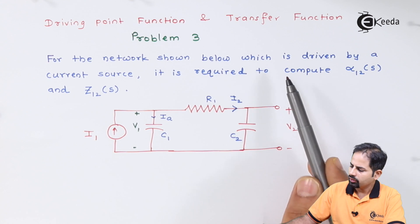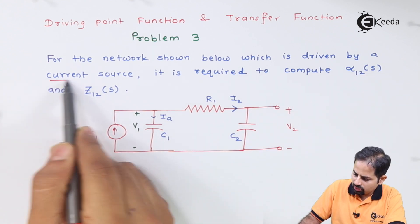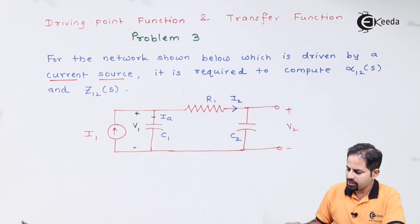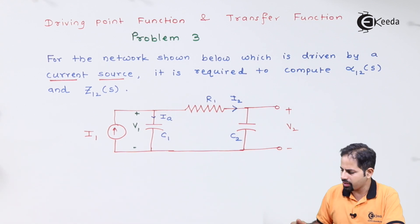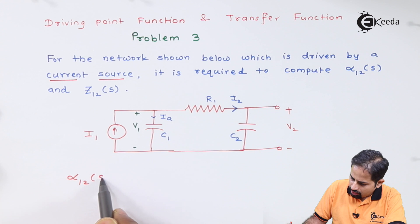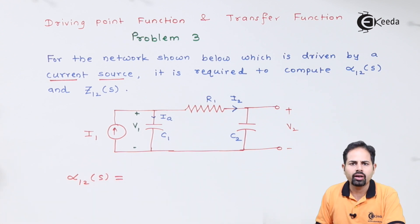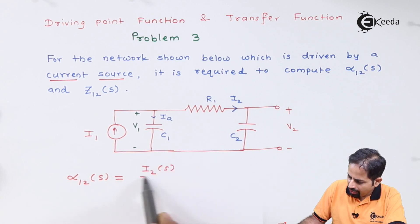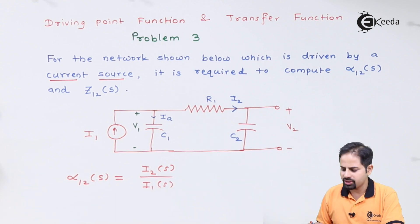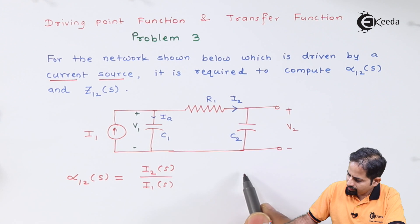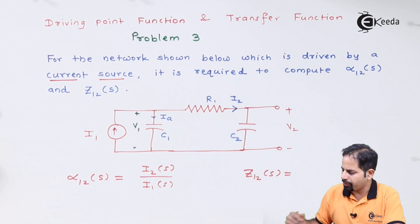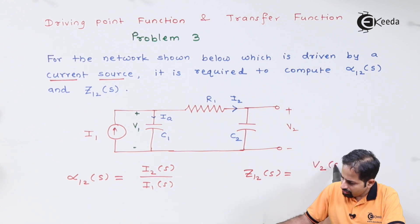For the network shown below, which is driven by a current source i1, it is required to compute α₁₂(s) and Z₁₂(s). α is the current transfer function, so α₁₂(s) = I₂(s) / I₁(s). Z₁₂(s) is the impedance transfer function — impedance is voltage divided by current — so it is V₂(s) / I₁(s).